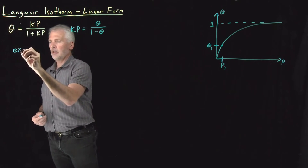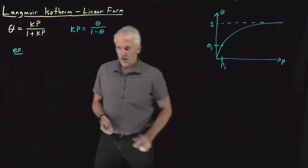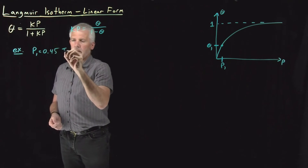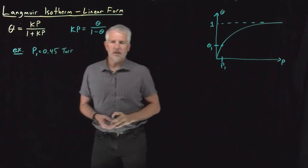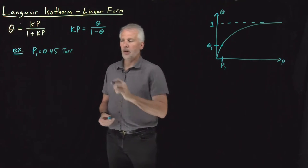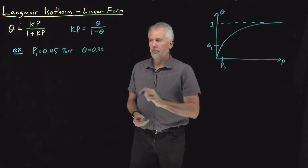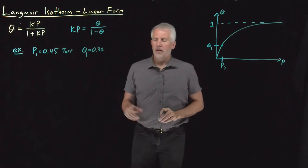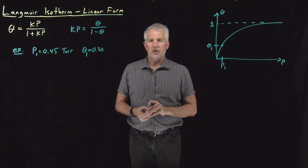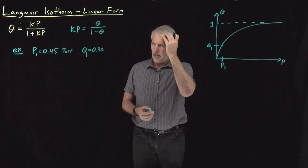So for example, let's work an example. Let's suppose that we introduce some gas phase species above the surface at a very low pressure of just a little below half a torr, and that's enough that we can measure that the surface coverage is 30%. 30% of the surface is covered by these molecules adsorbed under these conditions at a particular temperature.